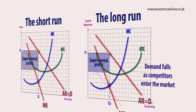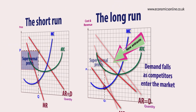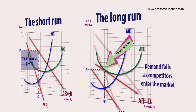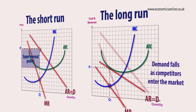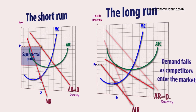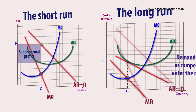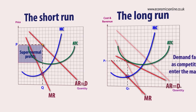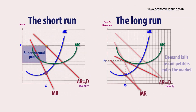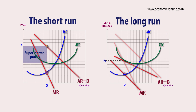This pushes down the firm's average revenue curve and makes the curve more elastic as there are now more choices for the consumer. This provides the incentive for the firm to innovate to keep ahead of rivals and make supernormal profits.